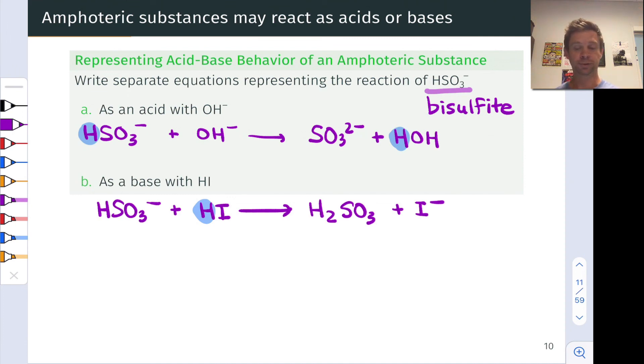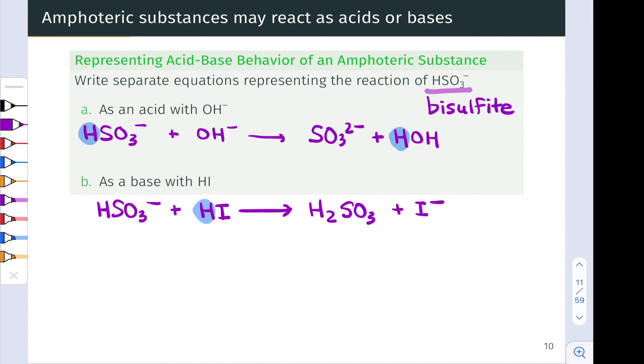HSO3- bisulfite is yet another example of an amphoteric anion, an anion with a proton that can be donated to a base, but that also has non-bonding lone pairs that can pick up or accept protons from acids, therein behaving as bases themselves.